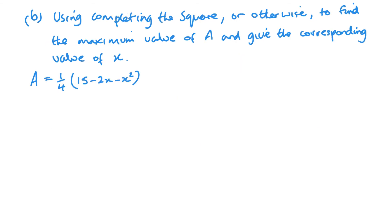Part B now. Completing the square or otherwise find the maximum value of A and the corresponding value of X. So let's start by completing the square. For that, I'm just going to put a square bracket in. I'm going to focus on inside the brackets. Now, what I actually also would like to do is take a minus sign outside.